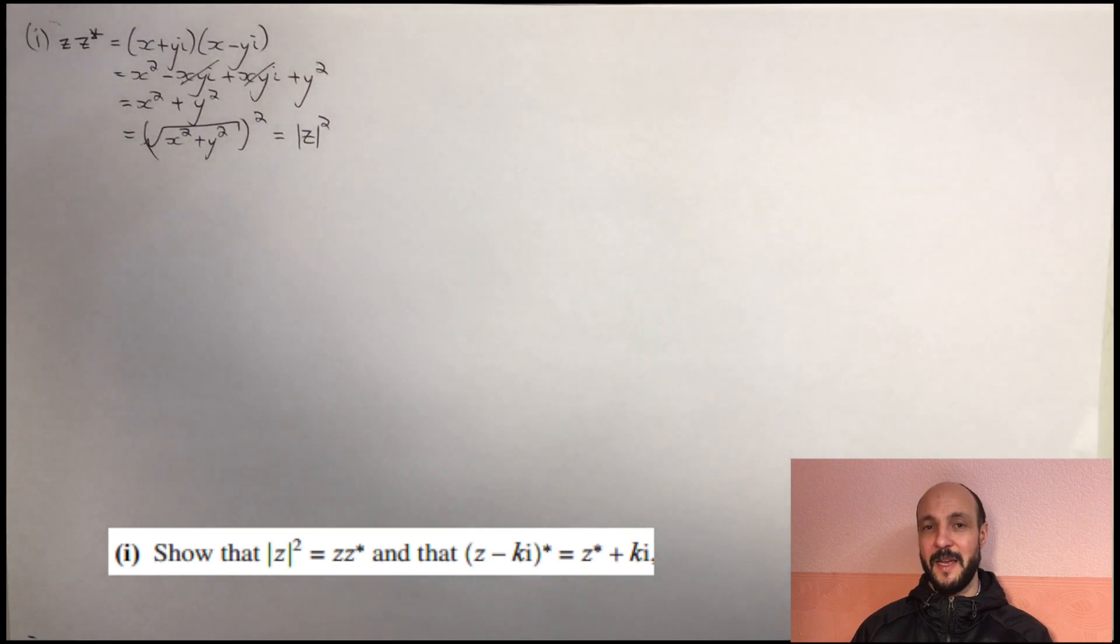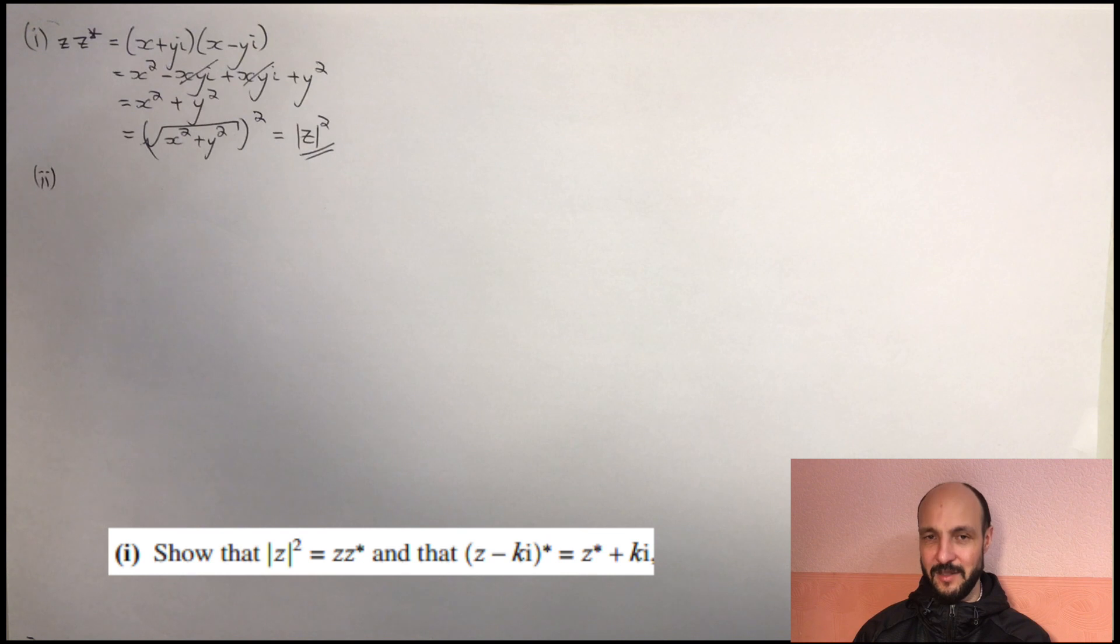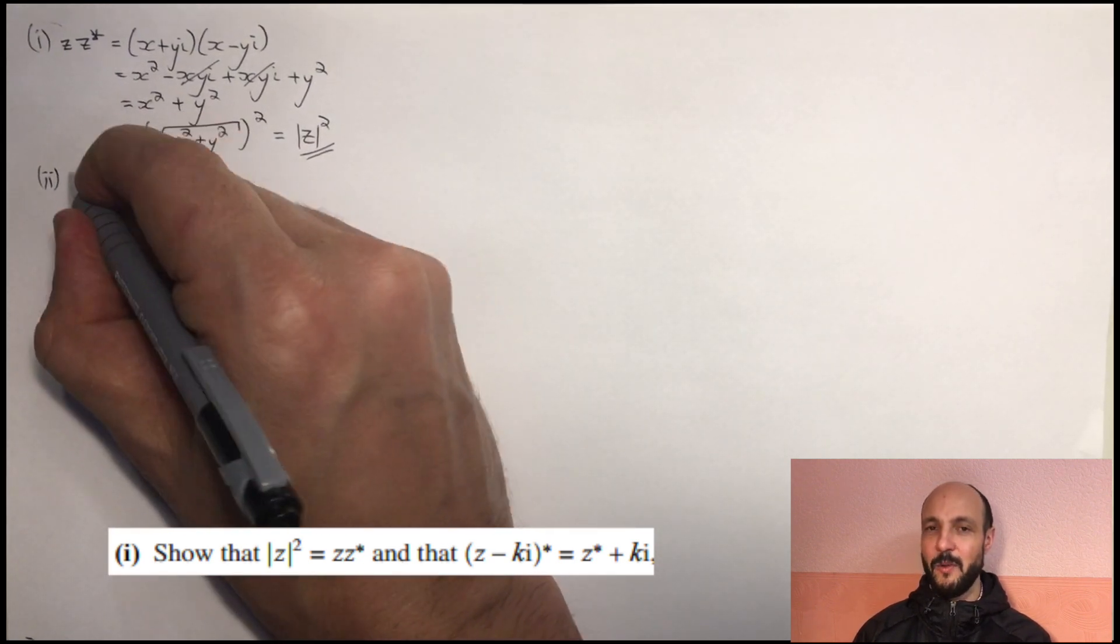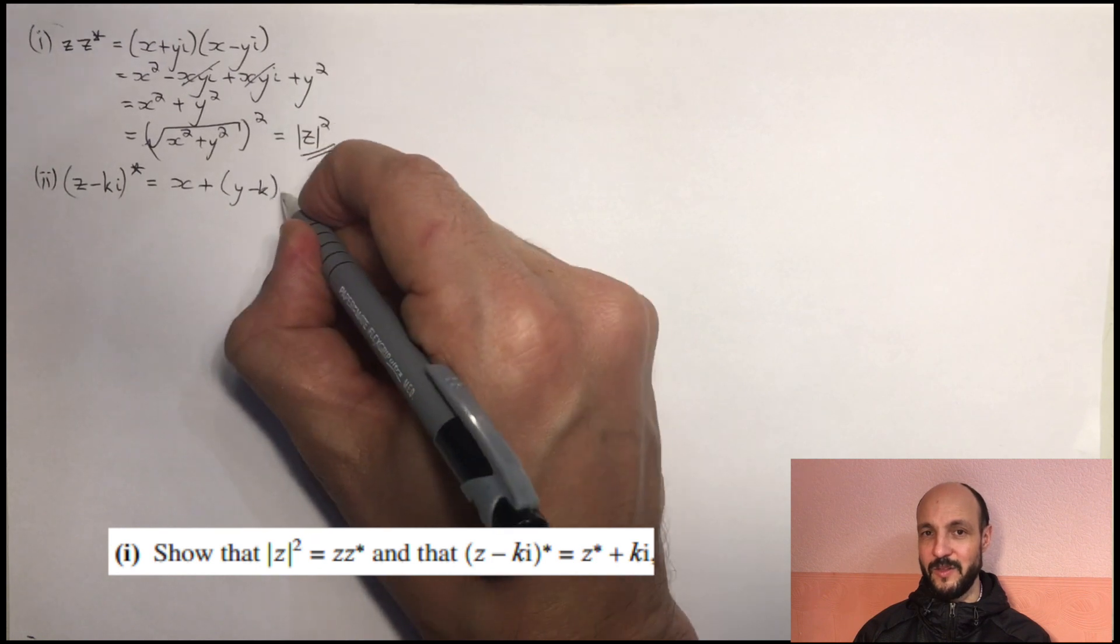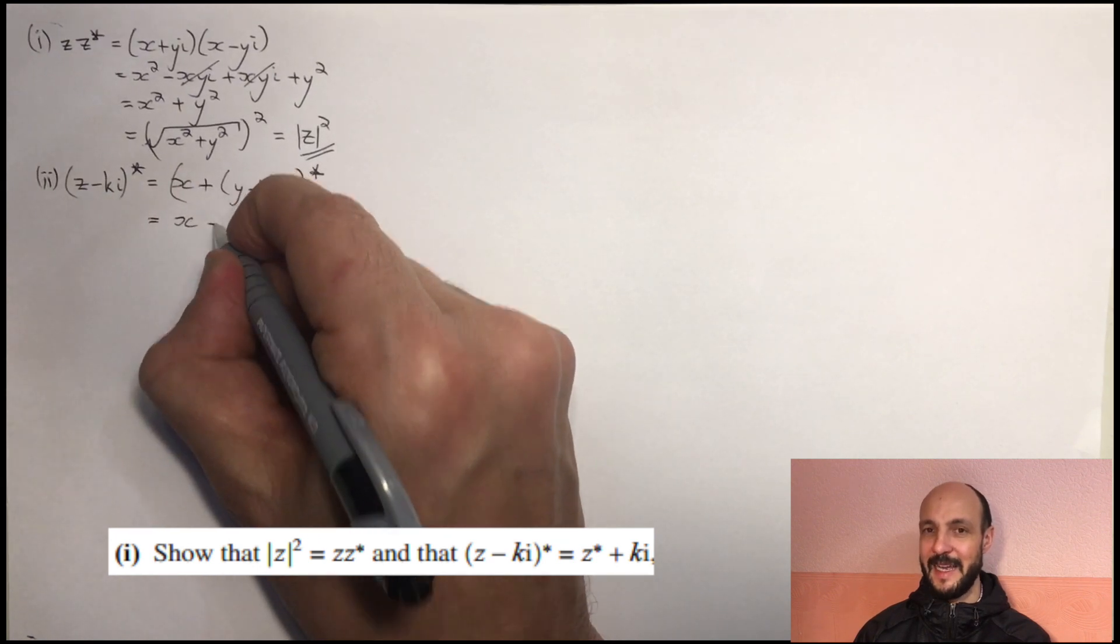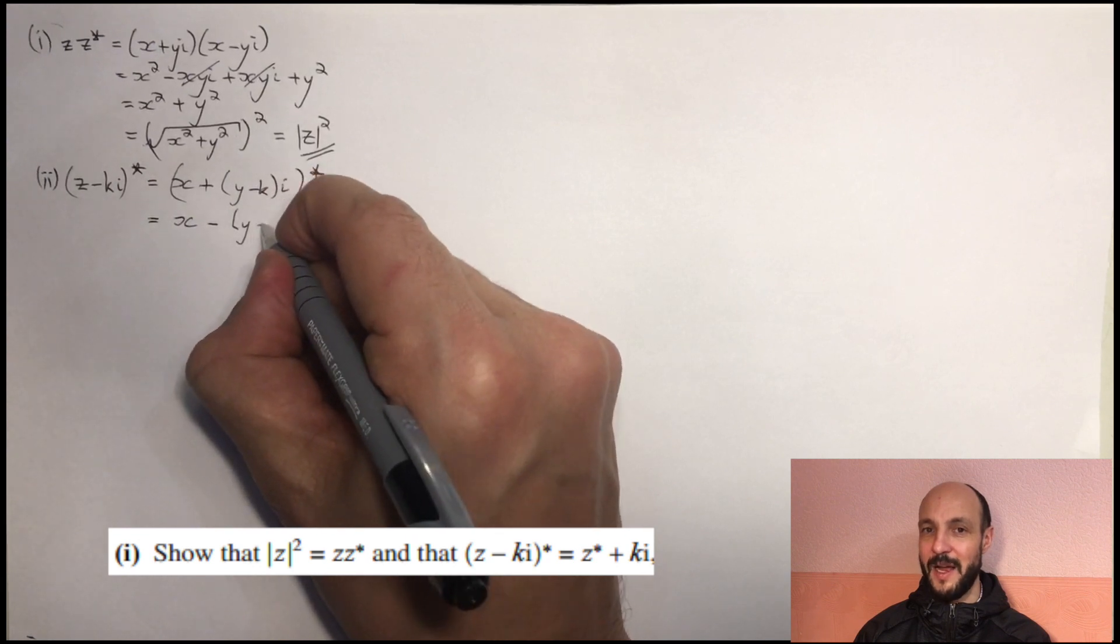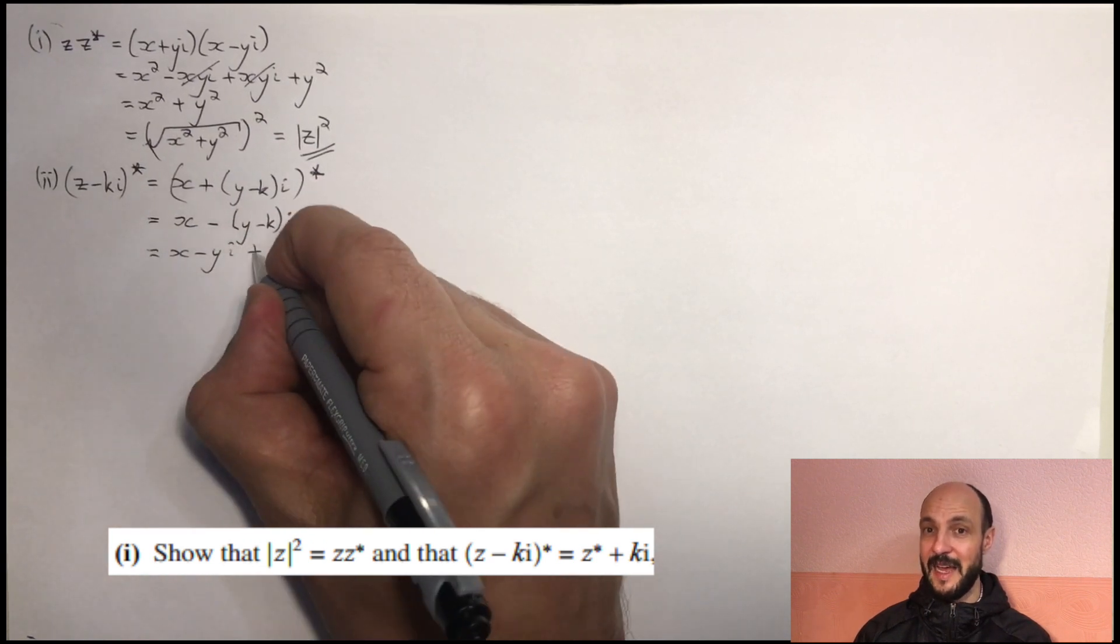Now, obviously, x plus yi times by x minus yi, we can apply the difference of two squares formula, but as they're actually asking us to demonstrate it so clearly, it's not a bad idea to put that extra step to show all of its detail there. So with the second part, we've got to show that z minus ki star equals z star plus ki. So we've got z minus ki conjugate. If we again write that out as x plus yi, we've got x plus, in brackets, y minus k times by i conjugate. So all we've done is we've grouped the yi with the minus ki. So if that's conjugated, x minus brackets y minus ki, and then we can split those out now and say x minus yi plus ki, because we've got a minus times a minus, which of course is z star plus ki, which is what we're wanting.